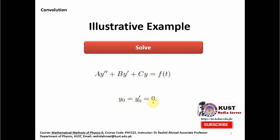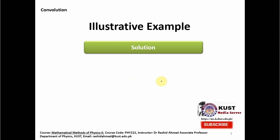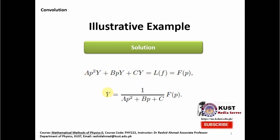We will use the Laplace transform. When solving a second order linear differential equation with Laplace transforms, we take the transform of each and every term. Taking the Laplace transform term by term gives us a·p²·Y + b·p·Y + c·Y = F(p). From this, Y equals [1 / (a·p² + b·p + c)] · F(p), and the function in the denominator is usually known as a transfer function.